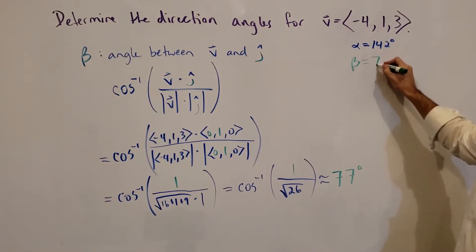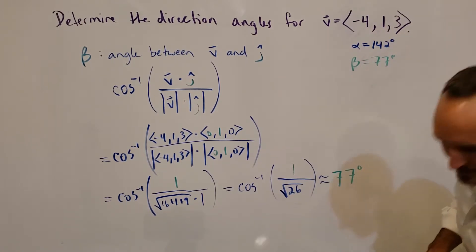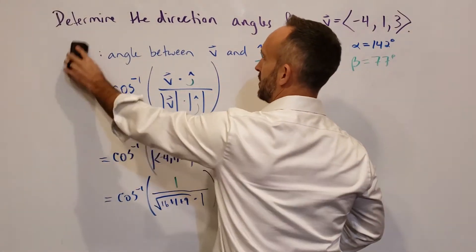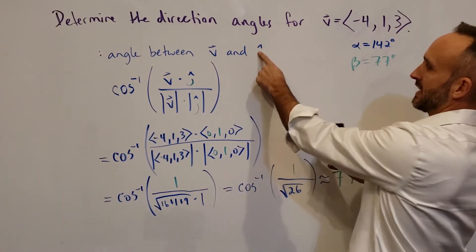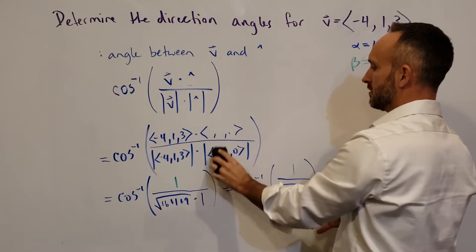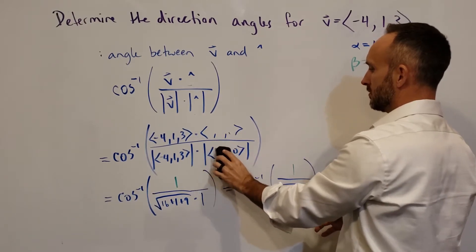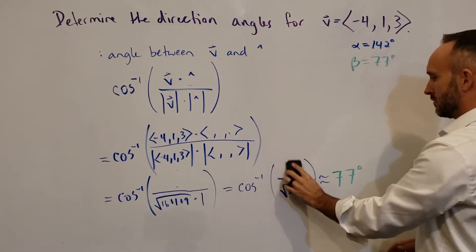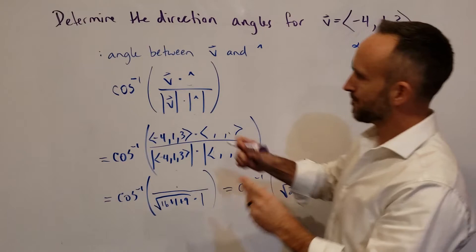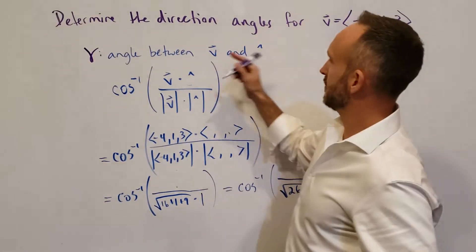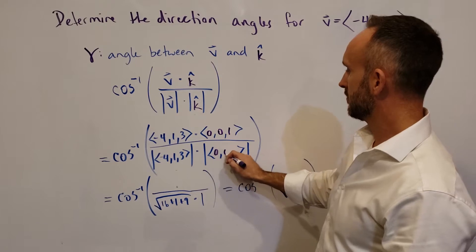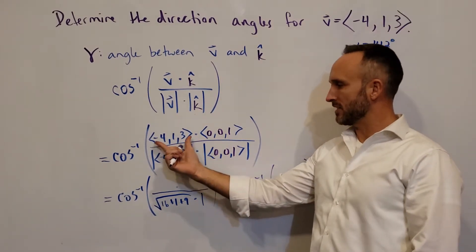So beta is about 77 degrees — that's the angle between this vector and the positive y-axis. Now let's do gamma. Same process. Gamma is the angle between v and the positive z-axis, or k-hat. So I'm going to change all my j's to k. K-hat is the unit vector (0, 0, 1).